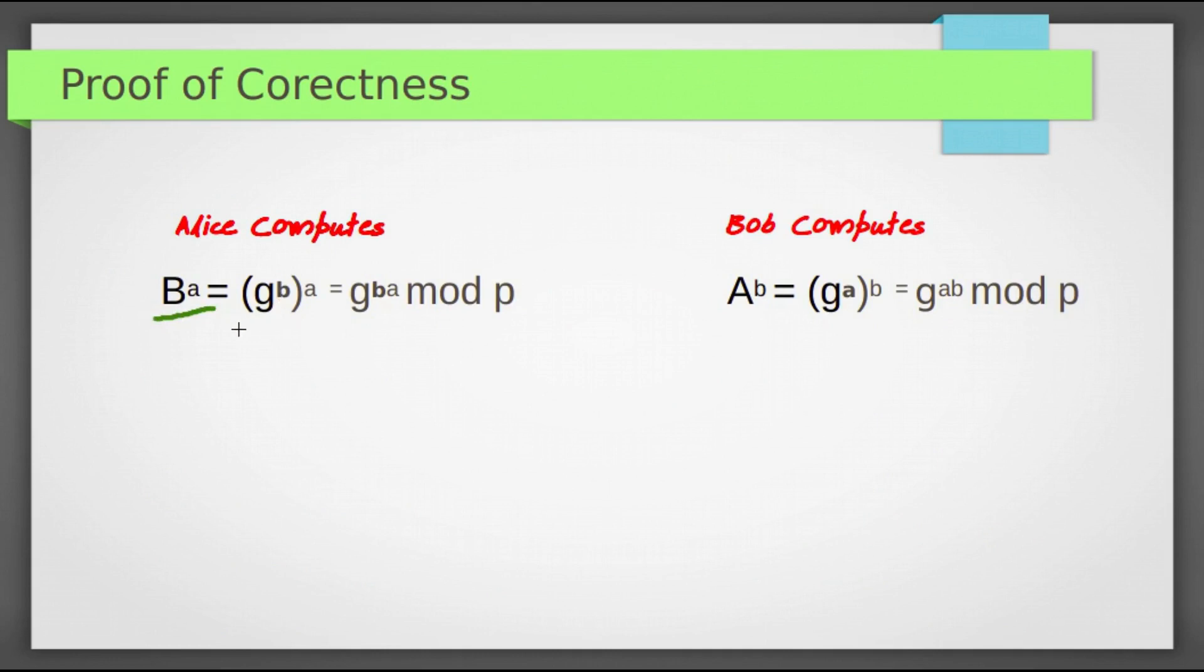Let us see why it is working properly. Alice computes B^a, where B is g^b, so g^b whole power a equals g^(ba) mod p. Bob computes A^b, where A is g^a, so final value is g^(ab) mod p. Means both are computing same value g^(ab) mod p.